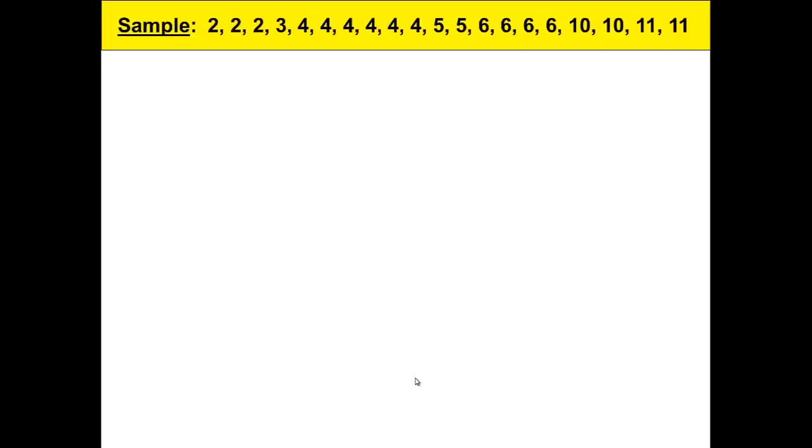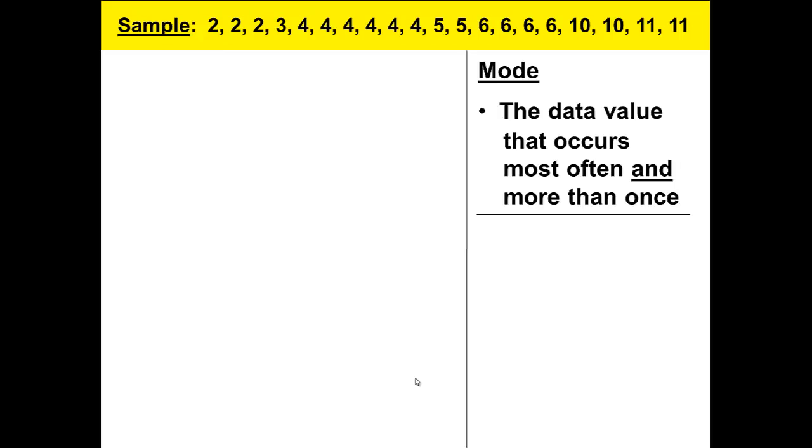This is the third video in the series and we will discuss first the mode. Using the same data we used in the previous videos, I can define the mode as the data that occurs most often and more than once. There can be more than one mode. This is important as some texts will define this differently, but this is the way that we define the mode.